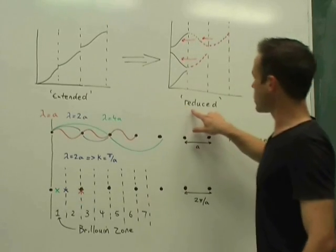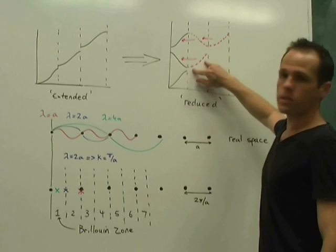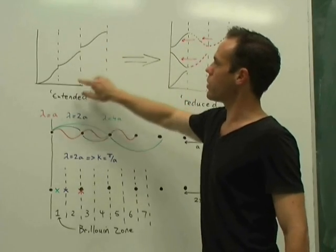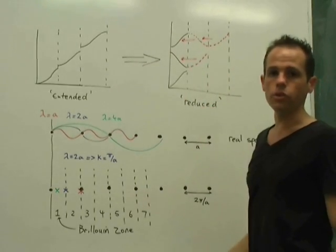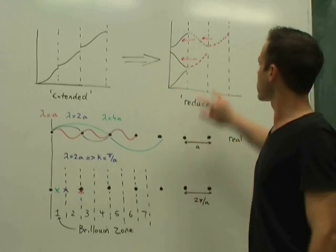Of course you can reduce this to what's known as a reduced zone scheme by subtracting a reciprocal lattice vector from your higher Brillouin zones, and by doing that you can translate them back into the first Brillouin zone. And you'll notice something interesting here, that this is done by mirror reflections.